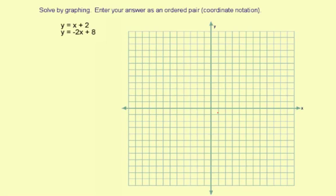Solve by graphing. Enter your answer as an ordered pair, which is coordinate notation. So our goal is to graph both these equations on the same graphing grid and find the point or points of intersection.